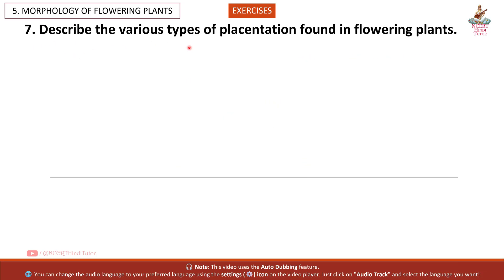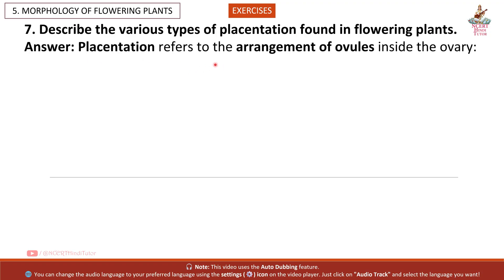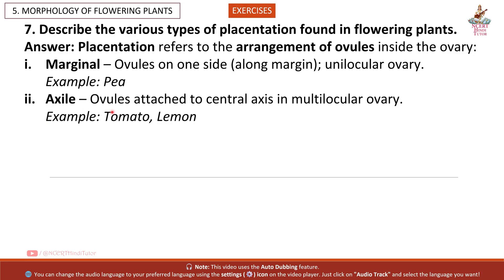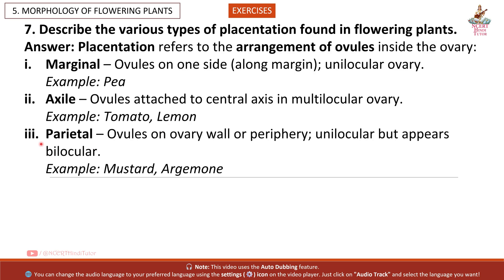Question 7: Describe the various types of placentation found in flowering plants. Answer: Placentation refers to the arrangement of ovules inside the ovary. 1. Marginal: ovules on one side along the margin, unilocular ovary. Example: pea. 2. Axile: ovules attached to central axis in multilocular ovary. Example: tomato, lemon.